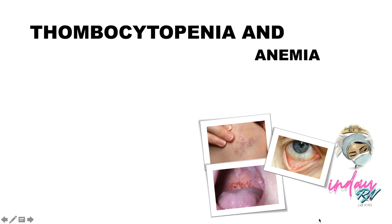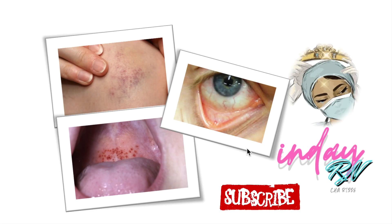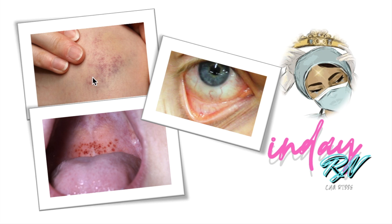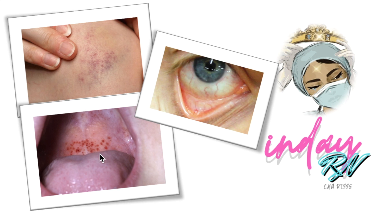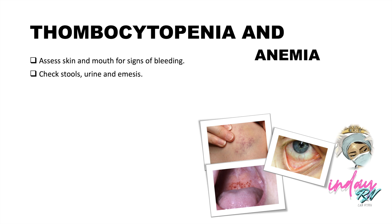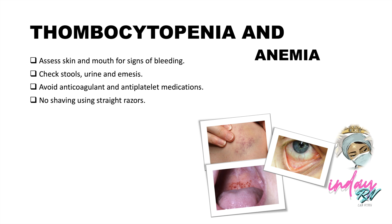Since chemotherapeutic agents attack abnormal cells, they also affect normal cells — RBCs and platelets are not excluded. Thrombocytopenia, or low platelet count, and anemia, or low hemoglobin, are side effects of chemotherapeutic agents. Signs include pallor of the eyelid for anemia and bruising for thrombocytopenia. Nursing management includes: assessing skin and mouth for signs of bleeding; checking stools, urine, and emesis for internal bleeding; avoiding anticoagulants and antiplatelet medications; and no shaving with straight razors — use an electric razor instead.